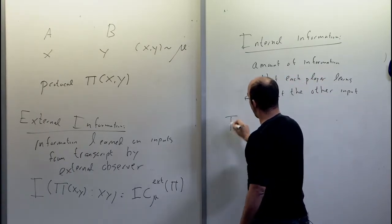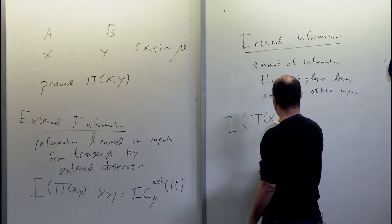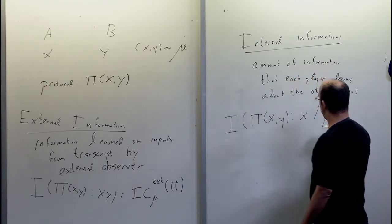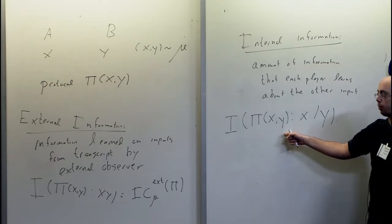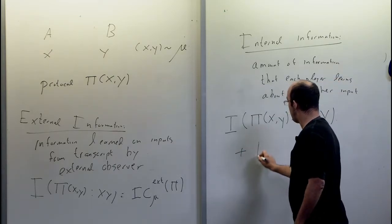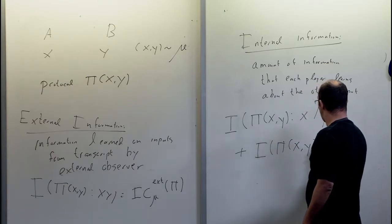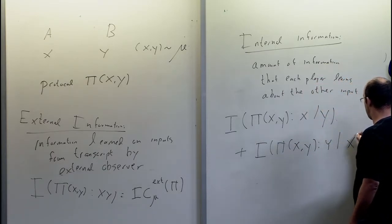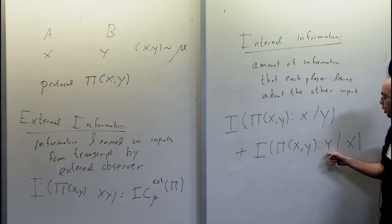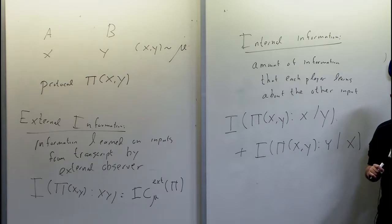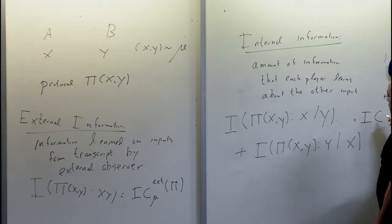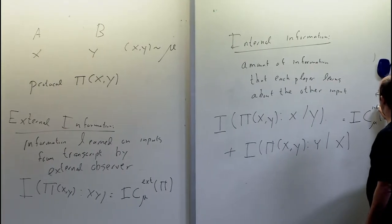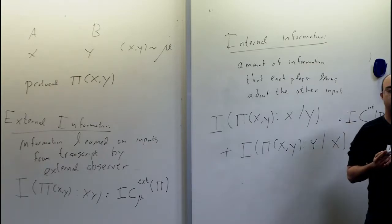Formally, the internal information is the mutual information between π(X,Y) and X given Y — how much Bob, who knows Y, learns about X from the protocol — plus the mutual information between π(X,Y) and Y given X. We call this the internal information cost of the protocol, abbreviated IC_μ(π).